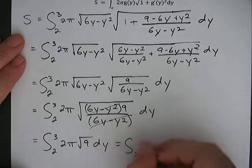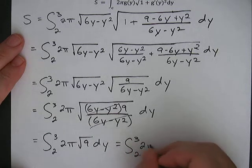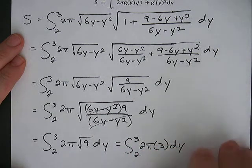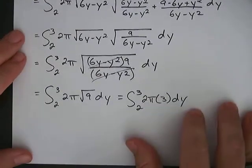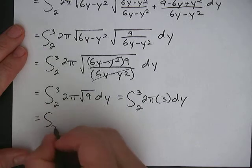which is integral 2 to 3 of 2 pi times 3 dy, which will be 6 pi.